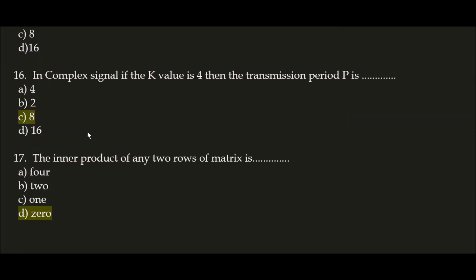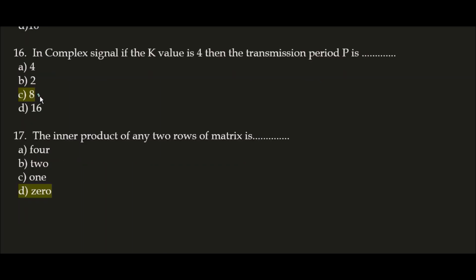Next question: in a complex signal, if the k value is 4, then the transmission period P is 8. In real signals P equals k, but in complex signals the transmission period P is double the k value. So if k is 4, then P is 2 × 4 = 8. The correct answer is option C: 8.